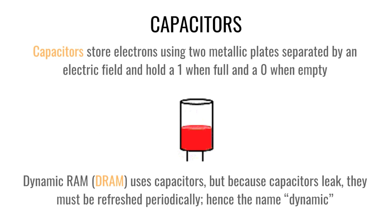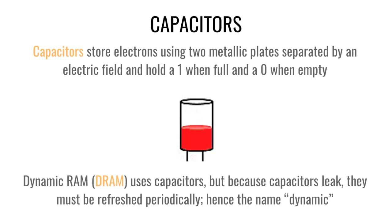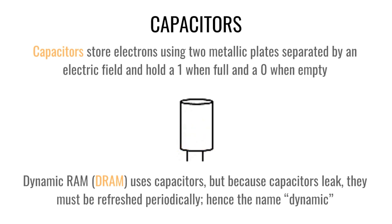It's very important that we define what a capacitor and a transistor are. There are two types of RAM: static RAM and DRAM, or dynamic RAM. A capacitor can store electrons, and when it's full it holds a one; when it's empty it holds a zero. Put billions or trillions of these together and you can start holding some data. The problem with capacitors is that if you leave them alone, the electrons leak out, so the computer has to constantly refresh them.